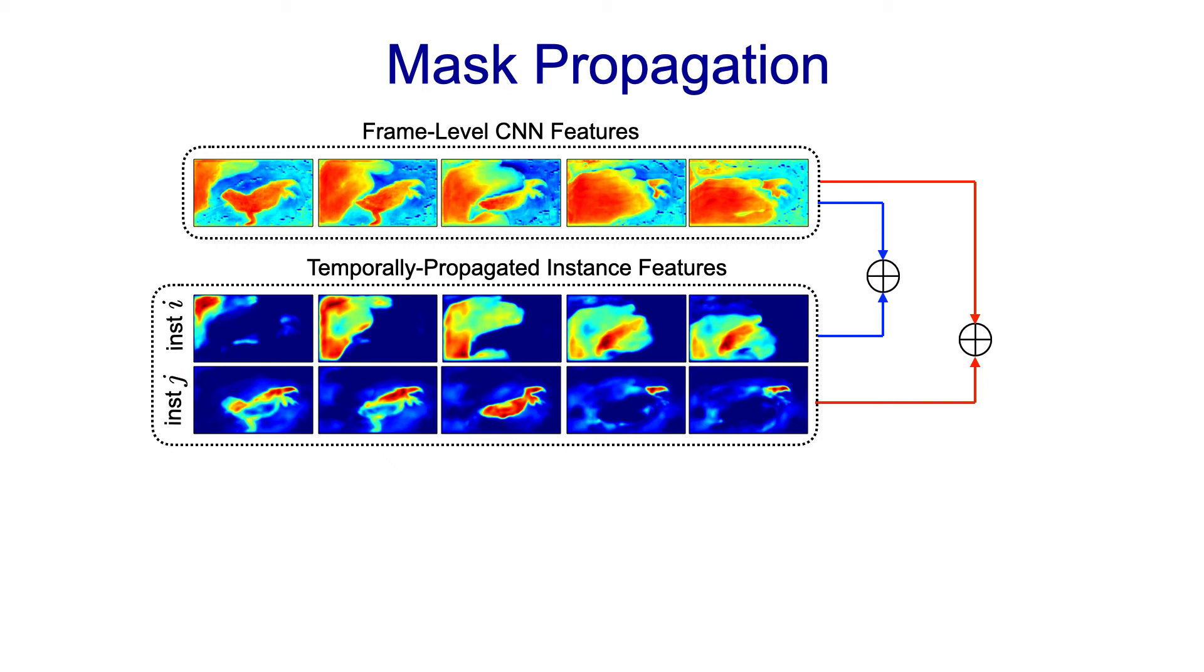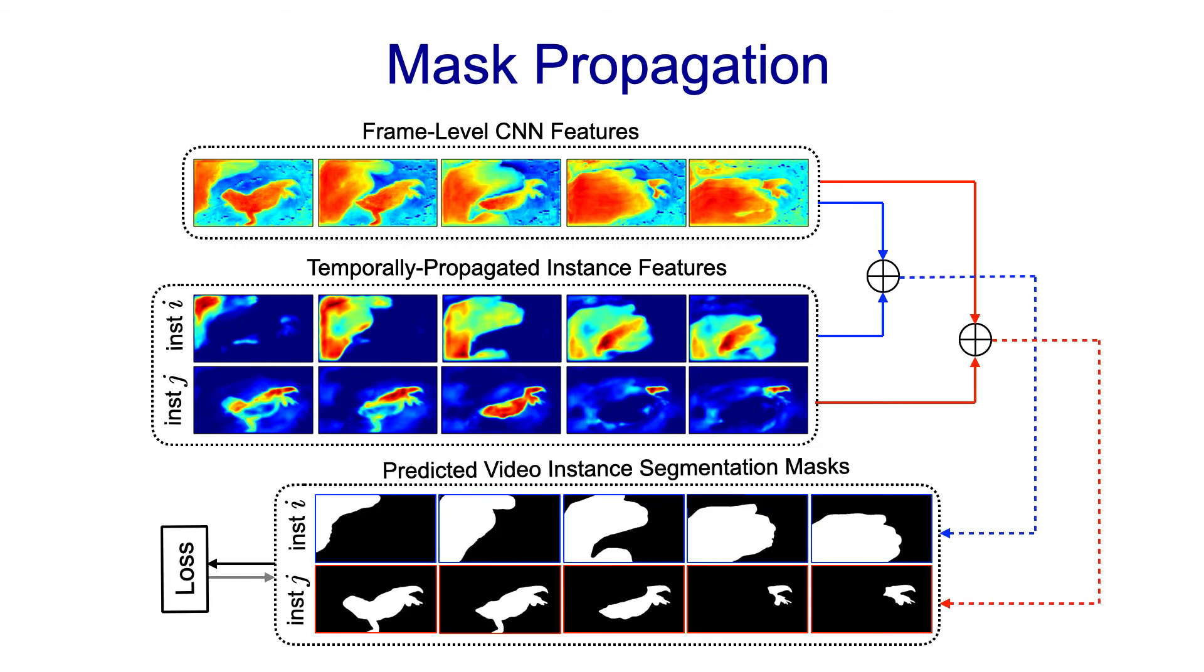Conceptually, aggregating these feature tensors together allows us to reinforce the feature signal associated with each object instance. The resulting feature tensors are then used to predict clip-level instance segmentation masks for every object instance appearing in the middle frame.